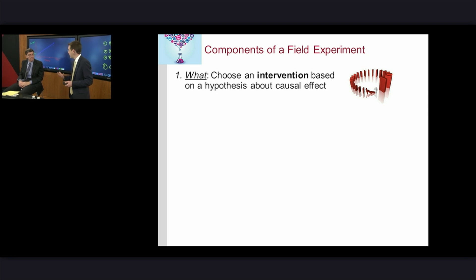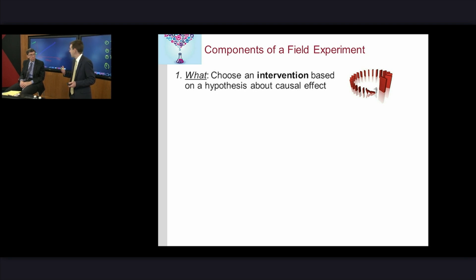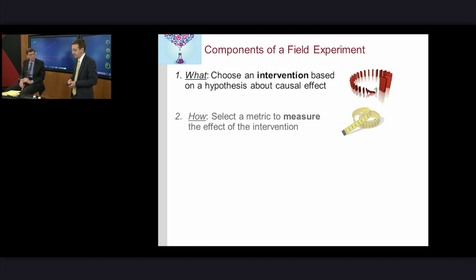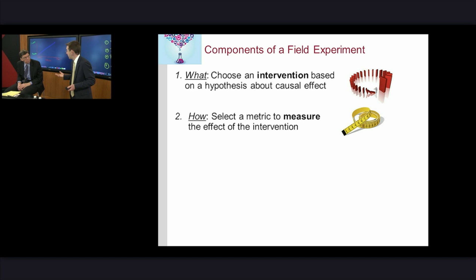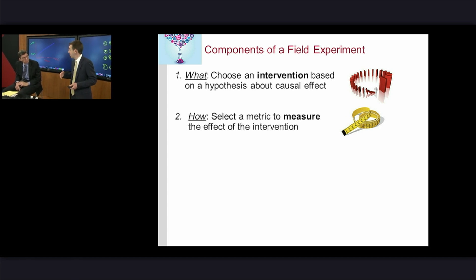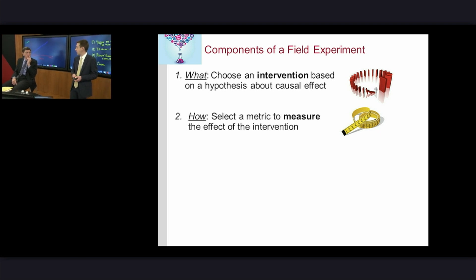The intervention is based on a hypothesis about what it might or might not do. Our head of HBX is constantly thinking about what this means for demand more broadly externally and for the business school. Then we need some sort of metric to measure the effect of the intervention — the metric matters. It could be profitability, growth, or number of people in the room.